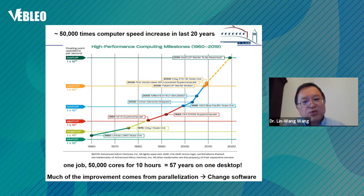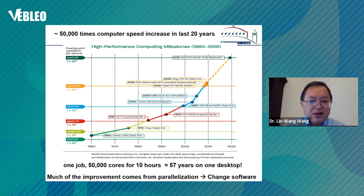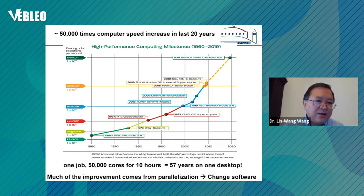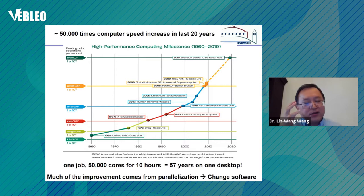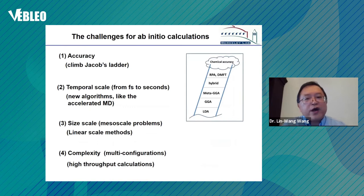Another major driving force is the rapid increase in computing power. Over the last 20 to 30 years, computer speed has increased 50,000 times. As a joke: if 30 years ago when I started my PhD I submitted a job that wasn't finished by now using those old computers, I could submit the same job on a modern computer and it would finish within a few hours. You can imagine that with that speed, the explosion of computing power, it's no wonder we've had a revolution in using such techniques in our research.